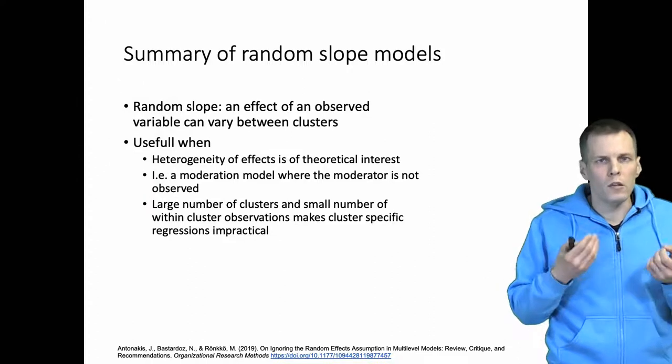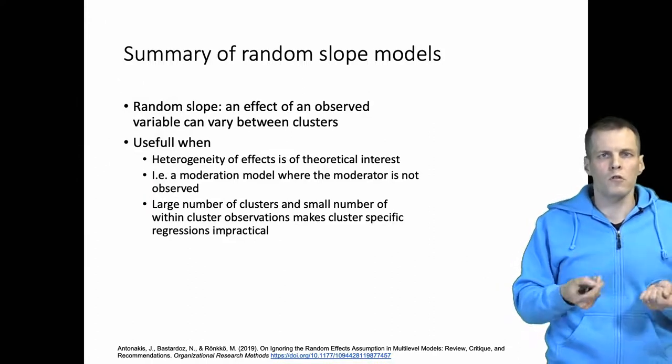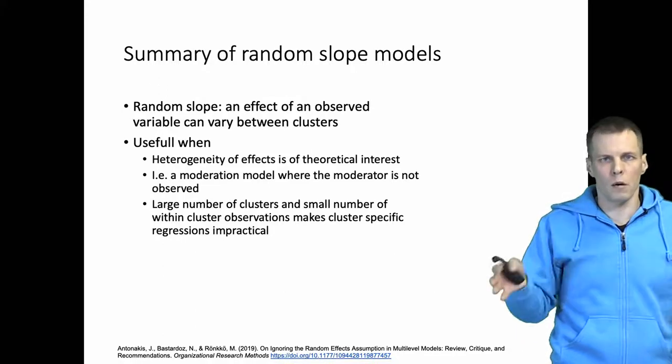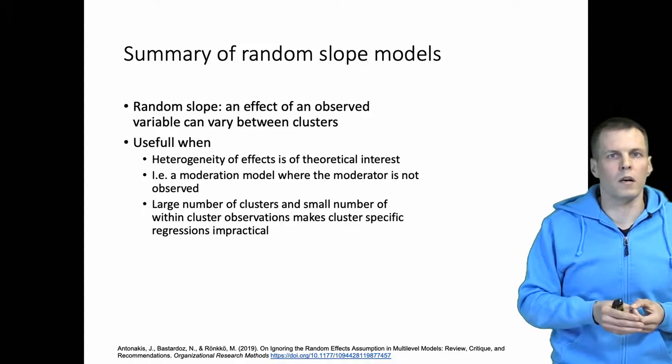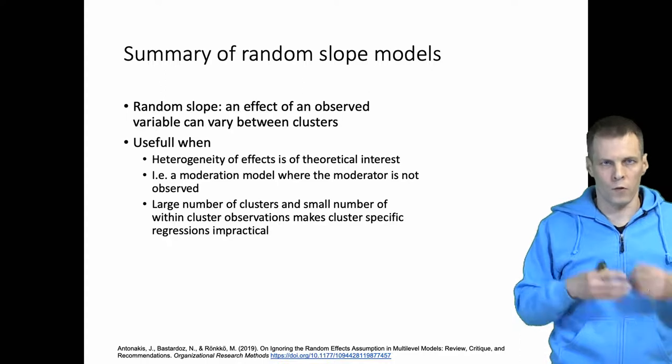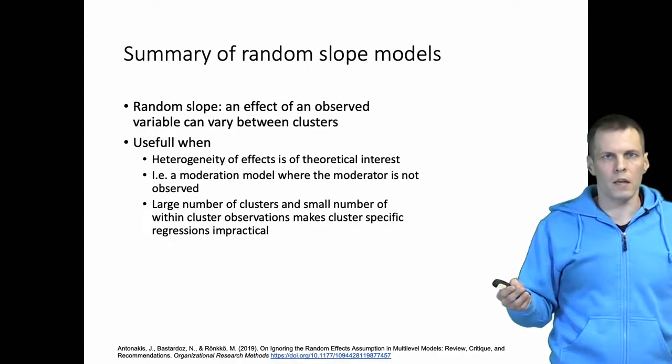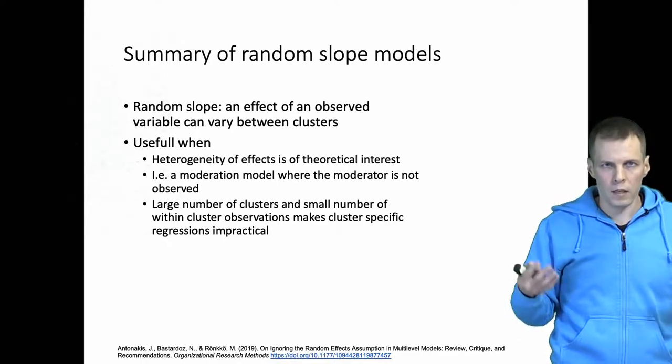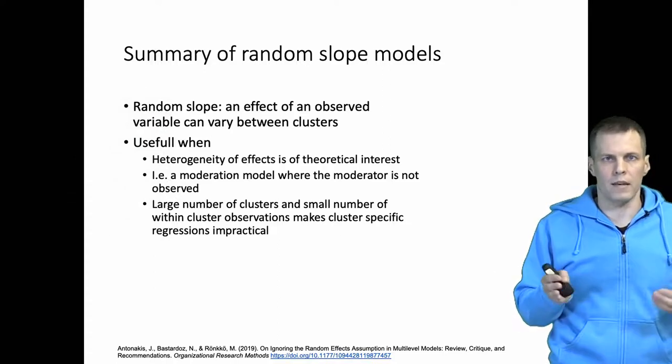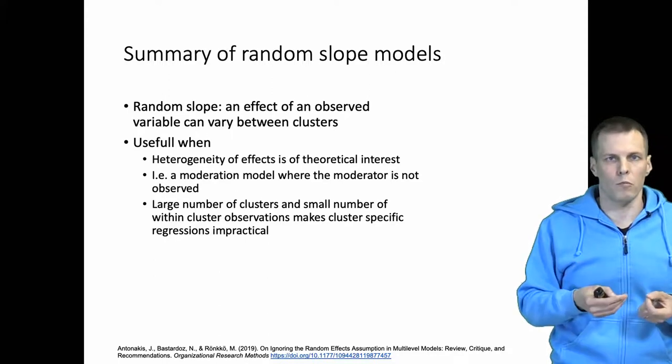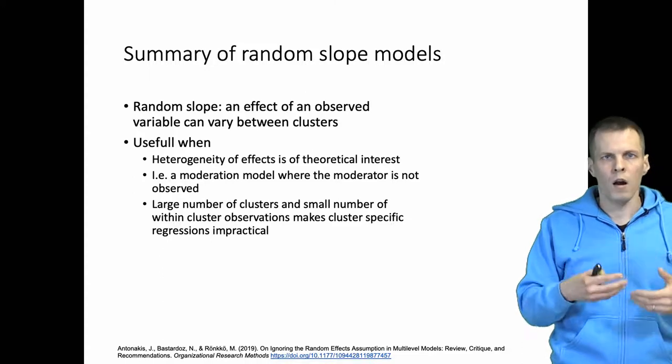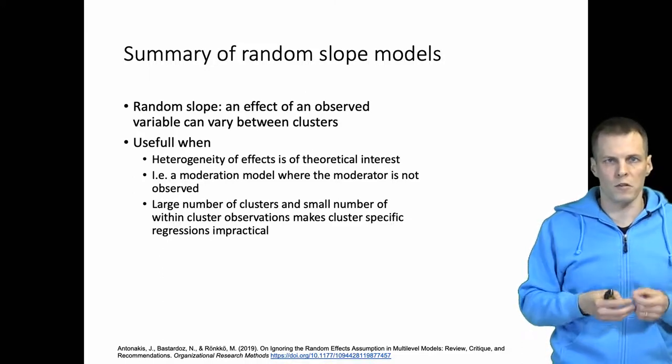You typically would not use this kind of model if you have few clusters with large numbers of observations per cluster. Let's say we have five countries and a thousand companies for each country. Estimating a country-level random effect wouldn't make any sense. We can just run a separate regression model for each country, and that gives us better estimates than the random slope model. This is for scenarios where you have a large number of groups but small number of observations within group.